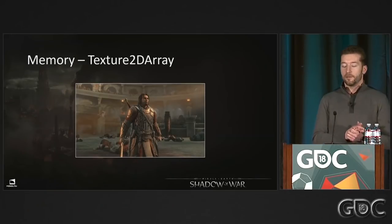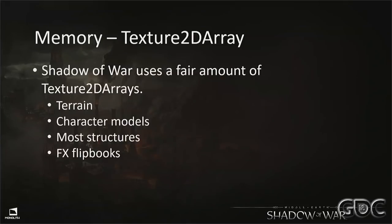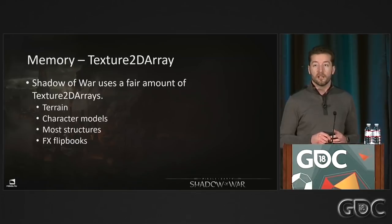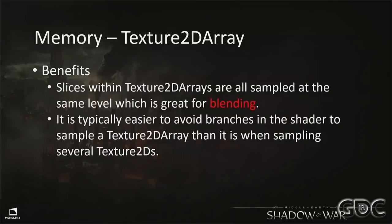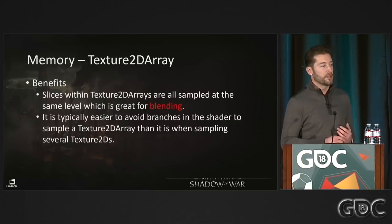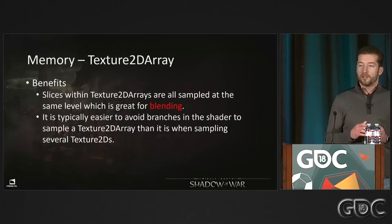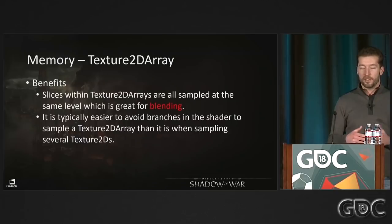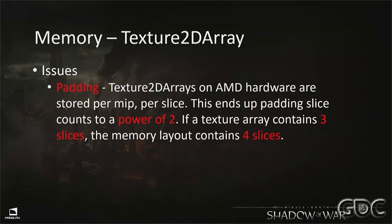The next area we looked at was Texture 2D arrays. We use them extensively in Shadow of War — for terrain, character models, structures, and effects flipbooks. Benefits include guaranteed matching mip levels across all slices when sampling for blending, and simplified shaders since we don't need to branch on whether individual Texture 2Ds are valid — we just calculate indices into the array.